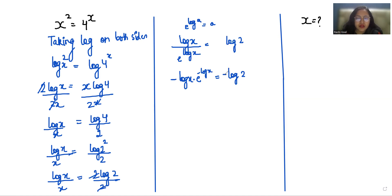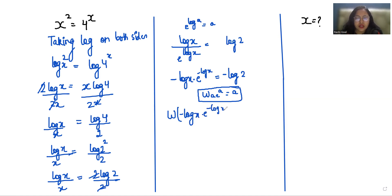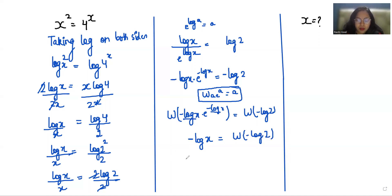Now I'm going to multiply with a negative sign on both sides and introduce the Lambert W function. So log x times e to the negative log x equals negative log 2. This whole thing equals negative log x, and in the power we have negative log x. So negative log x equals W of negative log 2. Again I'm going to introduce e to the power negative log x.